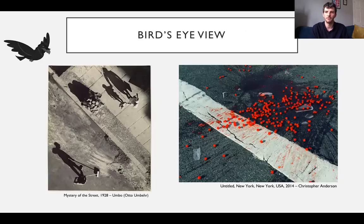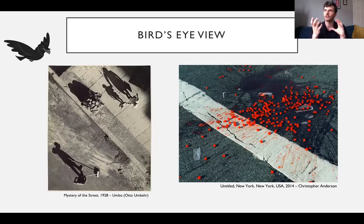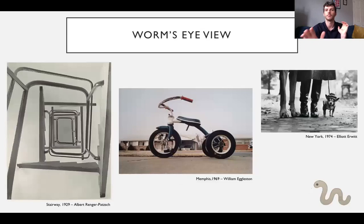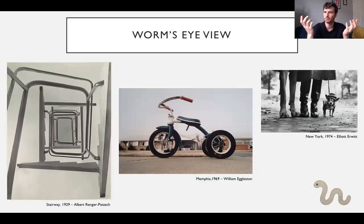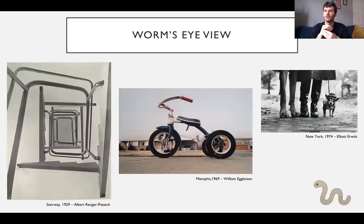Bird's eye view is often quite useful to think about - I often find quite interesting things just on the ground. The point here is to think laterally about the ways in which you're pointing the camera either down or up. Worm's eye view is the opposite to a bird's eye view, and this is all about getting the camera quite low or pointing upwards to create fresh perspectives on stuff that you might see every day in your home. This is a really interesting way of opening up creative results.